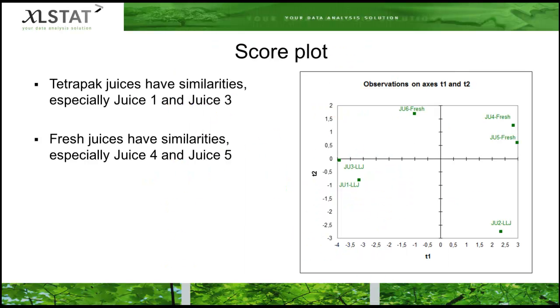In the score plot, we can visualize juices that are similar, such as juice 3 and juice 1, which are sold in Tetra Pak, or the fresh juices, juice 4 and juice 5.